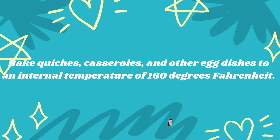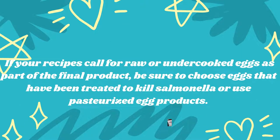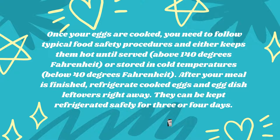Bake quiches, casseroles, and other egg dishes to an internal temperature of 160 degrees Fahrenheit. If your recipe calls for a raw or undercooked egg as part of the final product, be sure to choose eggs that have been treated to kill salmonella, or use pasteurized egg products. Once the eggs are cooked, keep them at temperatures above 140 degrees Fahrenheit or below 40 degrees Fahrenheit.